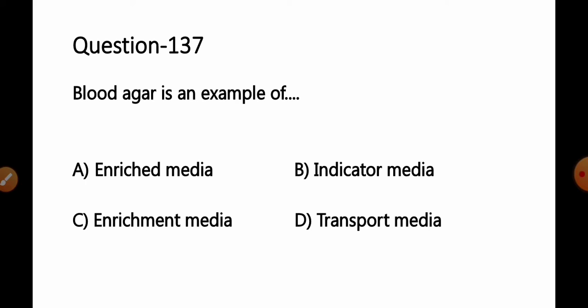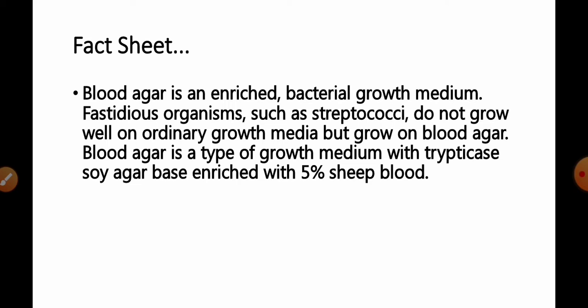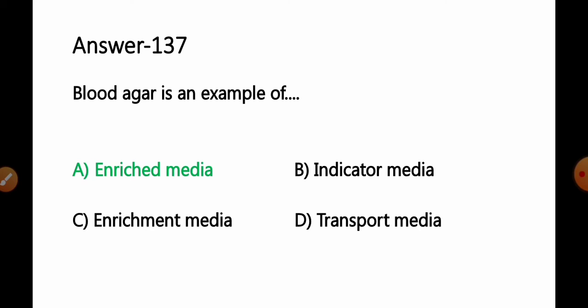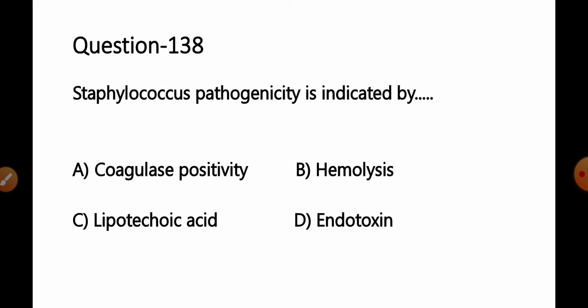Question 137: Blood agar is an example of: option A enriched media, B indicator media, C enrichment media, D transport media. Blood agar is an enriched bacterial growth medium. Fastidious organisms such as Streptococci do not grow well on ordinary growth media but grow well on blood agar. Blood agar uses a trypticase soya agar base enriched with 5% sheep blood. So option A enriched media is the correct answer.